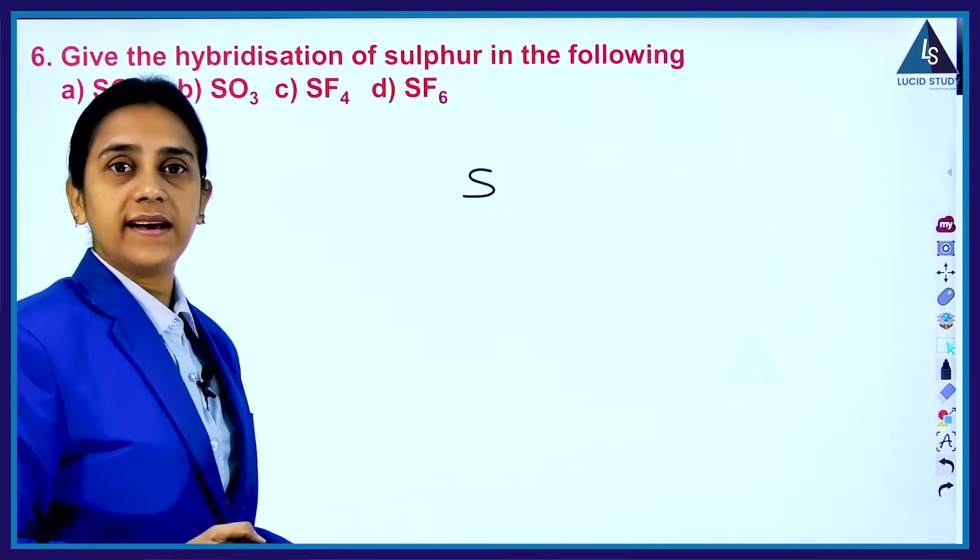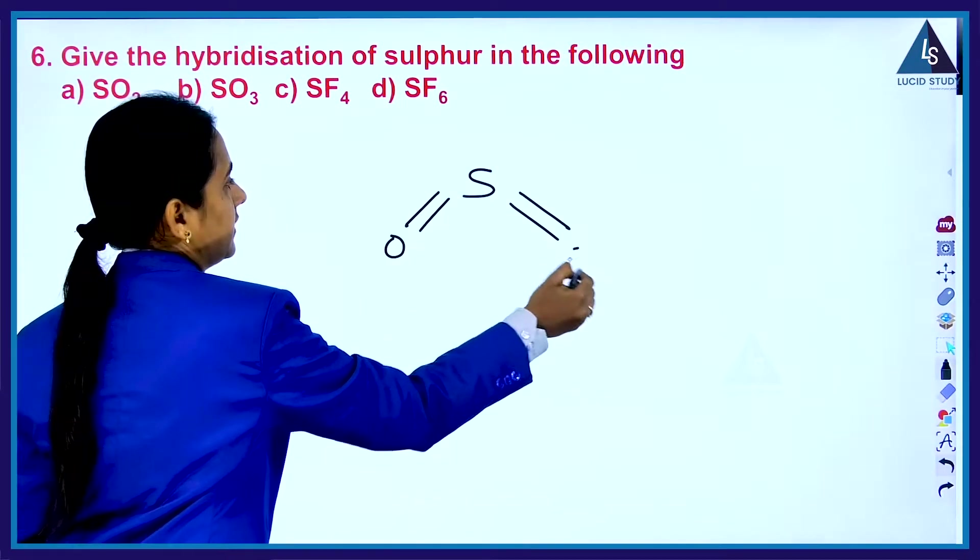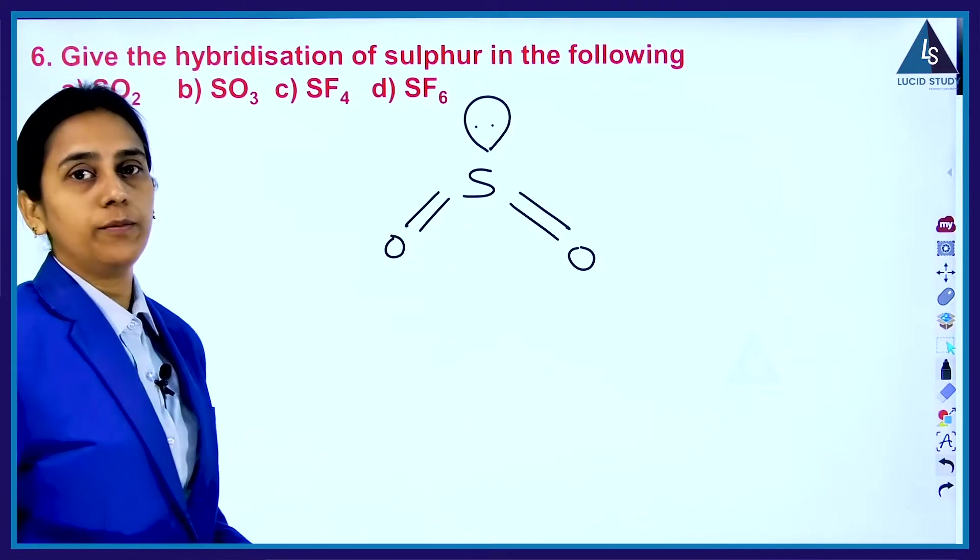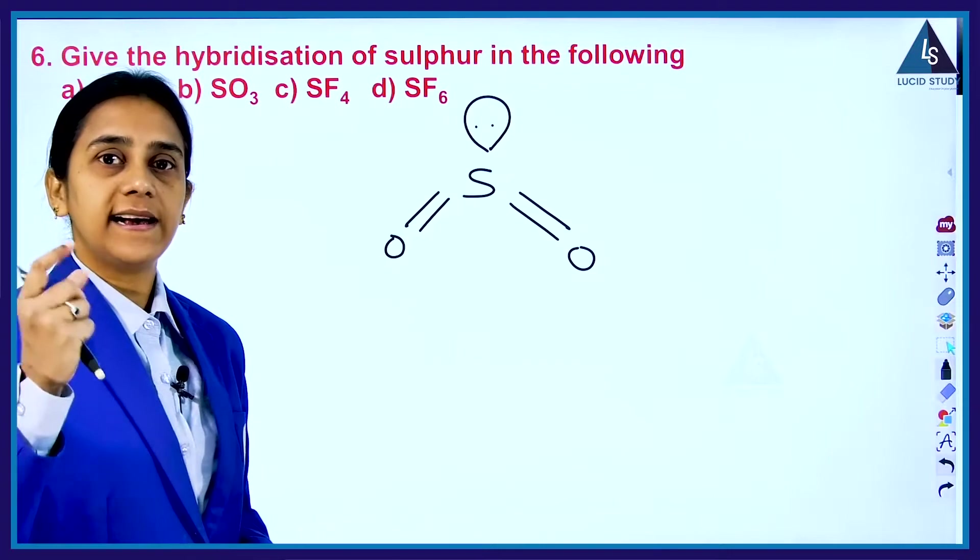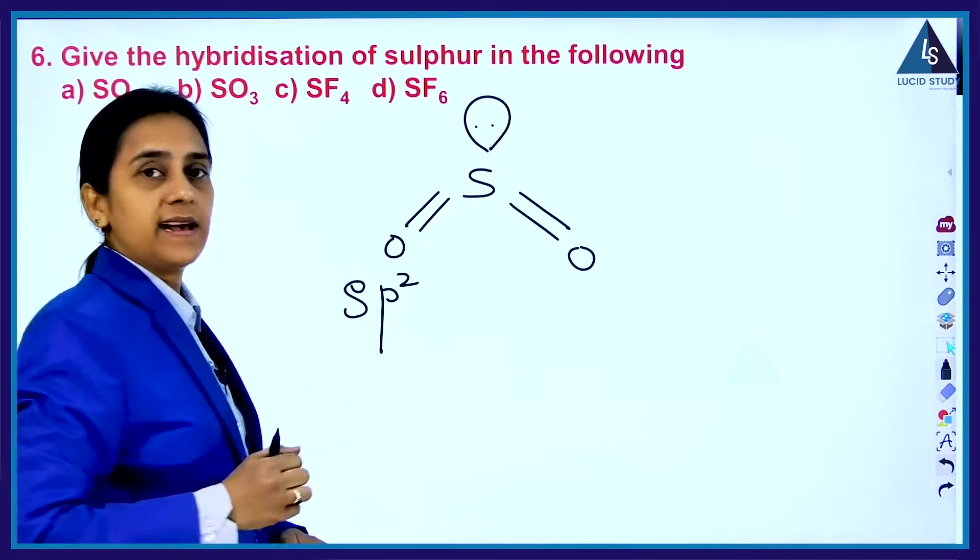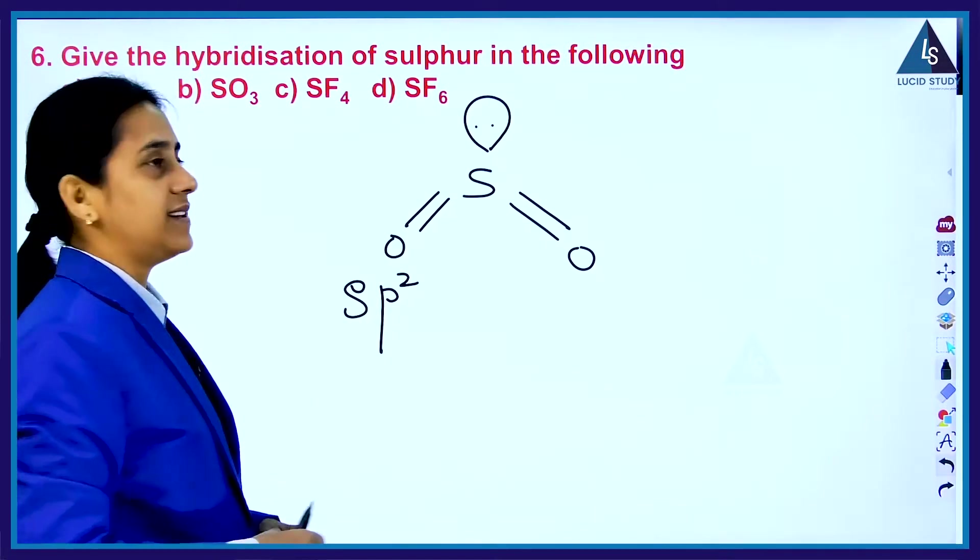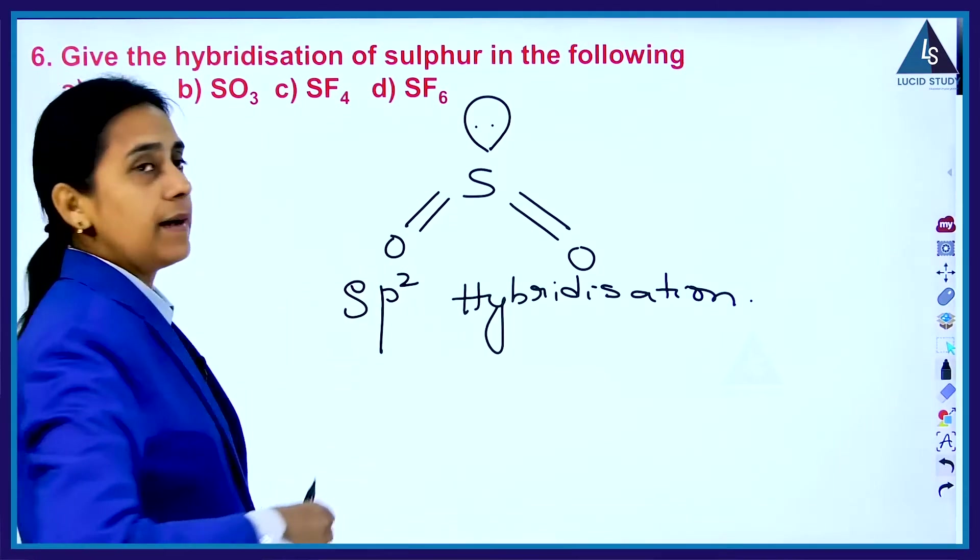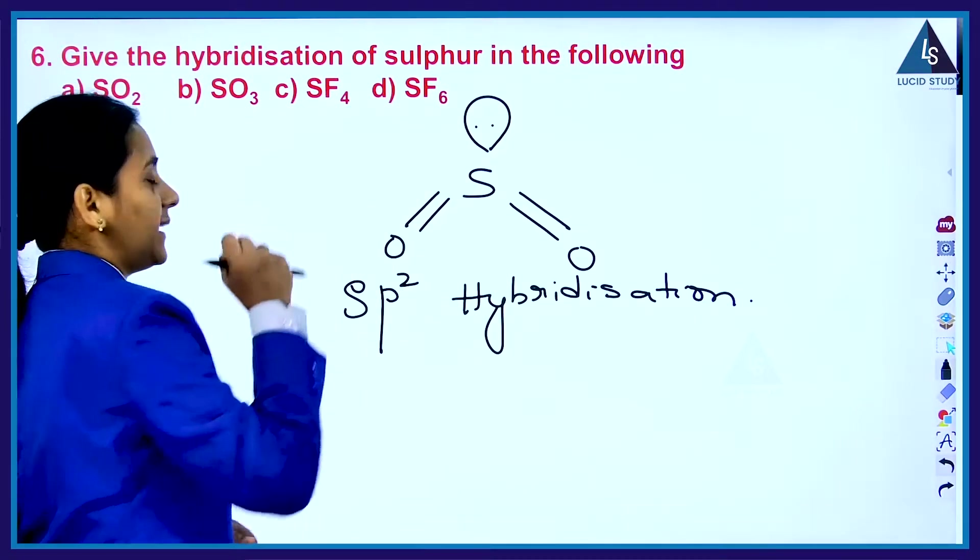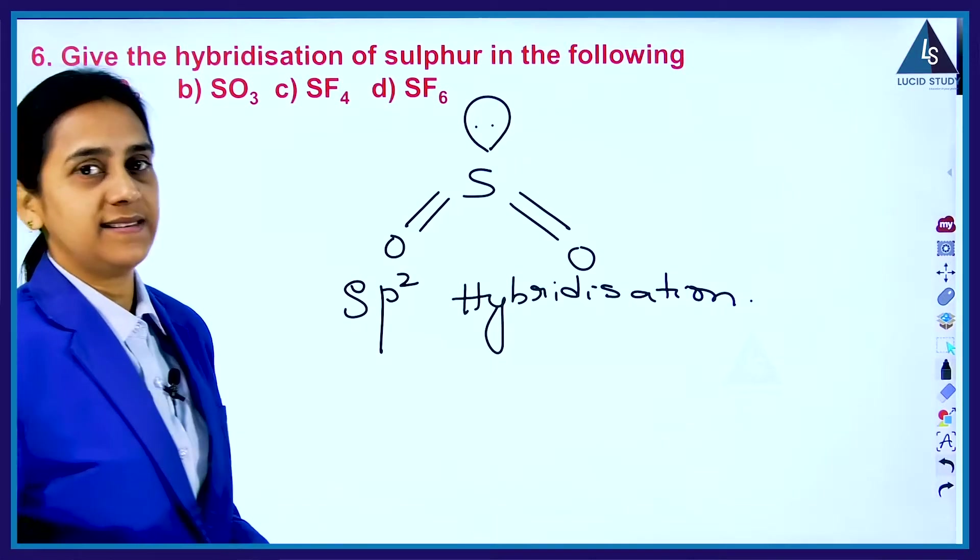Sulfur is a central atom and two oxygens are bonded with double bonds having a lone pair of electrons. When double bonds are present, it is SP2 hybridization. So the sulfur undergoes SP2 hybridization in SO2. Based on the structure also we can give the hybridization. If double bonds are there, it's SP2 hybridization.